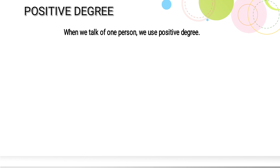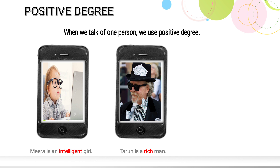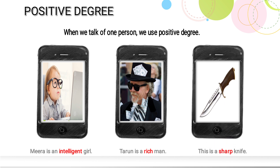Positive degree is used when we talk about one person or thing. Examples: 'Mira is an intelligent girl' — intelligent is the positive degree. 'Tarun is a rich man' — rich is positive degree. 'This is a sharp knife' — sharp is positive degree. All these describe a single person or thing, so they are positive degree adjectives.